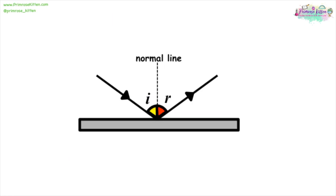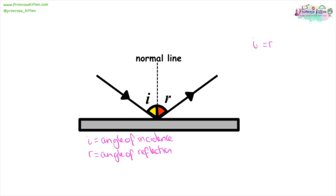When a wave is reflected it comes in, meets the boundary, and is reflected off. Our angle of incidence is always equal to our angle of reflection — we can say i equals r. The normal line is in the middle, it is a dashed line drawn at 90 degrees to the mirror or surface. If we have a sound wave being reflected instead of a light wave, we are going to get an echo.